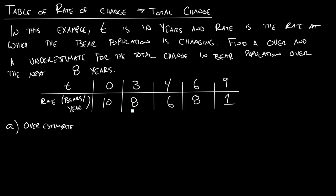At time equals 3, the number of bears is increasing by 8 bears per year. Kind of a terrifying idea, right? But this is what our problem is about. So we want to find an over and underestimate for the total change in the bear population over the next 9 years. So how are we going to start this? We actually want to start it exactly like we did with velocity and distance. So our overestimate, what we're going to do is we're just going to look at those same time intervals we were looking at before.